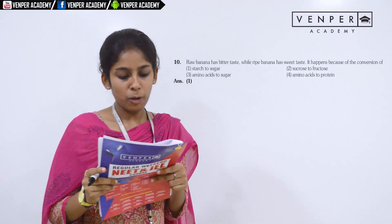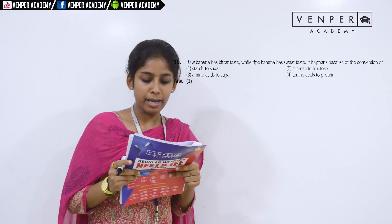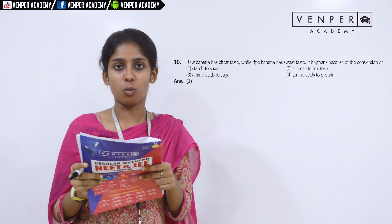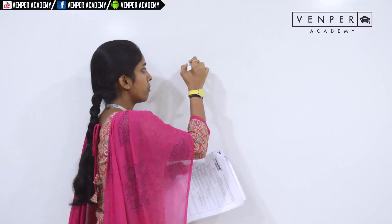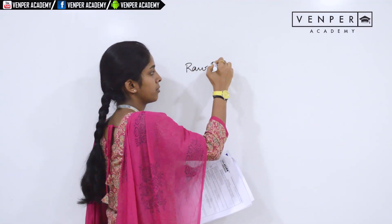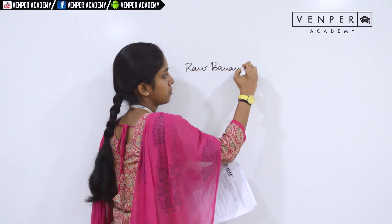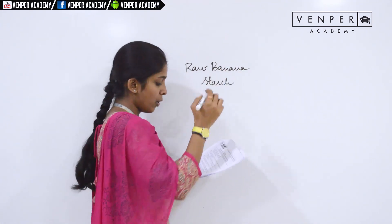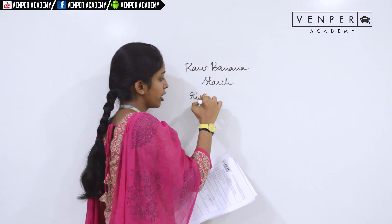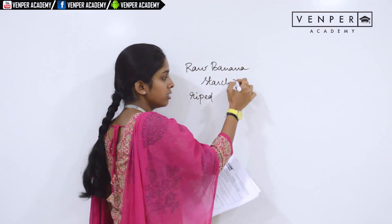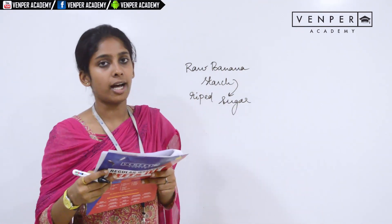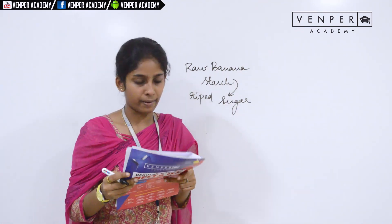Question 10: raw banana has bitter taste while ripe banana has sweet taste. It happens because of the conversion of what? Raw banana has starch. When the banana ripens, when your banana is ripened, this starch converts into sugar. Your option would be starch to sugar, that is option 1.